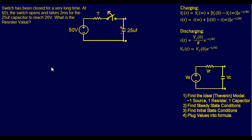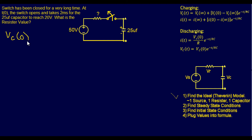This next problem states: the switch has been closed for a very long time, so we can assume the 25 μF capacitor is fully charged. At time zero the switch opens, and it takes 2 milliseconds for the capacitor to reach 20 volts. We need to find the resistor value. The circuit is already in Thevenin form — step one is complete. Since the capacitor was fully charged, the initial condition VC(0) = 50 volts. This is a discharge circuit, not a charging one.